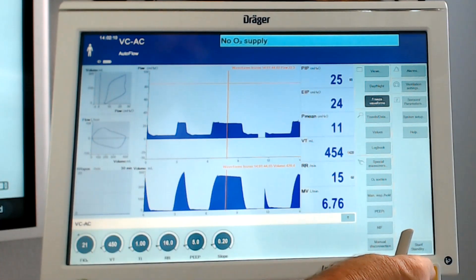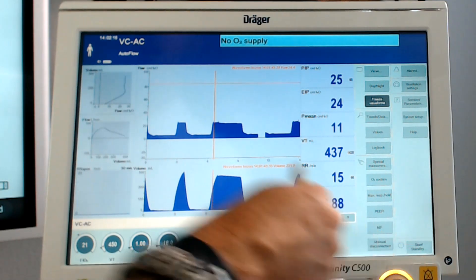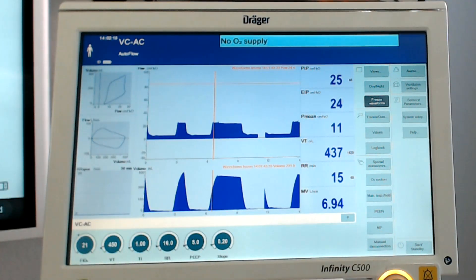So our plateau right now is 22.5, 22.6, we're going to call it 23. We're going to call our peak inspiratory pressure 24. So 24 on our peak inspiratory pressure, 23 on our plateau.